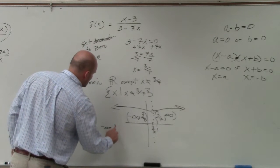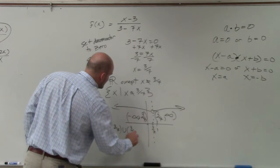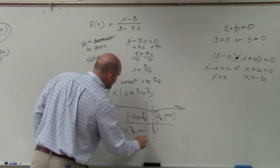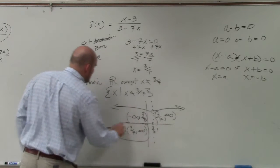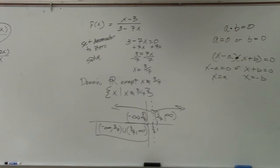So we'd write this in interval notation like this: negative infinity, 3 sevenths, union, 3 sevenths, positive infinity. That's the way I'd like you guys to write the domain. OK? So real quickly.